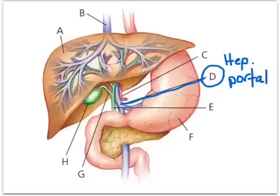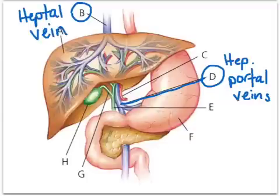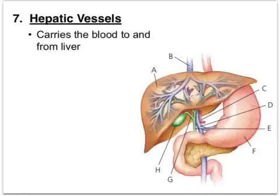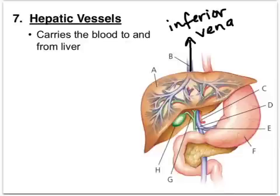Since there's a portal vein there must also be a hepatic vein and hepatic artery. The hepatic vein — without 'portal' in the name — takes blood from the liver back to the heart via the inferior vena cava. The hepatic vessels carry blood to and from the liver, with arteries supplied from the aorta.